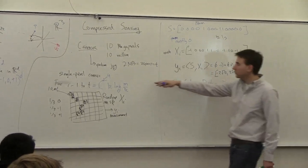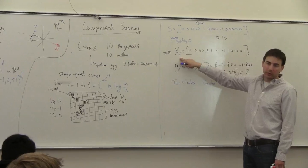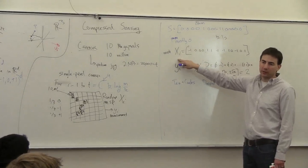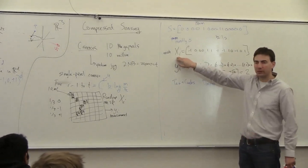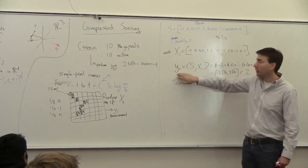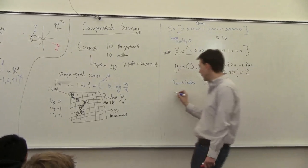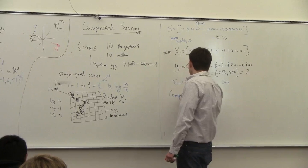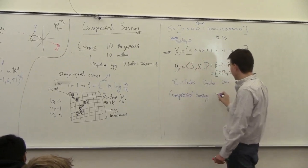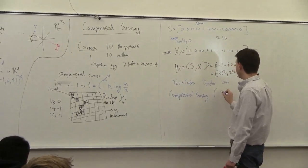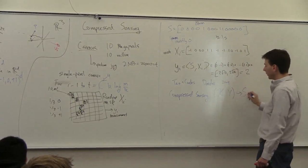So you have all these measurements, all these values Y. You also know all of the masks that you used. You have to know these maps in order to do this. So you have this set of random maps and the output measurements, and you want to recover the signal S. Compressed sensing is to go from the set X of all the maps, the vector Y of all the measurements, and get back the signal S.